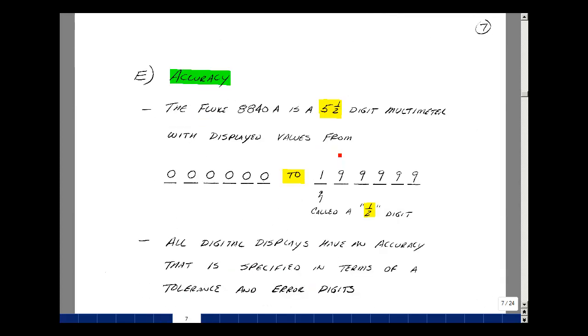Just like our resistors had a tolerance, our instruments also have a tolerance. The Fluke 8840A is what's called a five-and-a-half-digit multimeter. And what this means is that we have six places, one, two, three, four, five, and six. But this place can go from zero to nine, and so can these others except for the first digit, which only goes between zero and one.